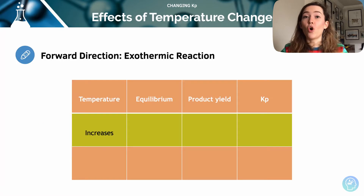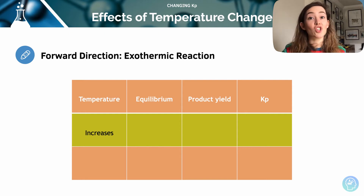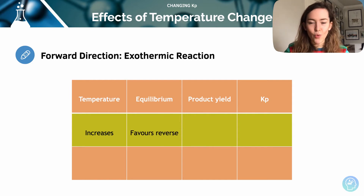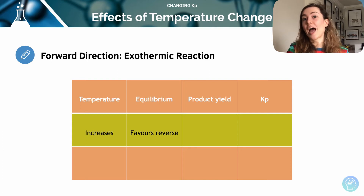Let's imagine that we've got a reversible reaction and the forward reaction is exothermic. Let's think about what's going to happen if we increase the temperature on that system. If the forward reaction is exothermic and we make it hotter, it's going to want to favour the endothermic reaction to cool itself down and oppose that change. So it's going to shift to the reverse of the reaction — it's going to move backwards. If the position moves back, then I'm going to be making less of my products. At any one time I'm going to have more of my reactants there, so we're going to decrease our products.